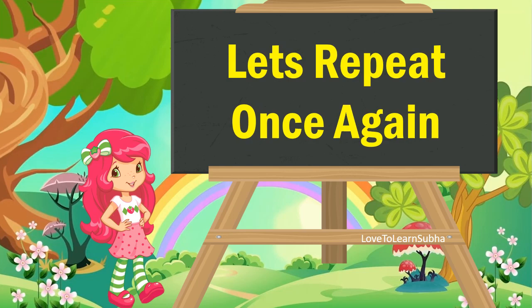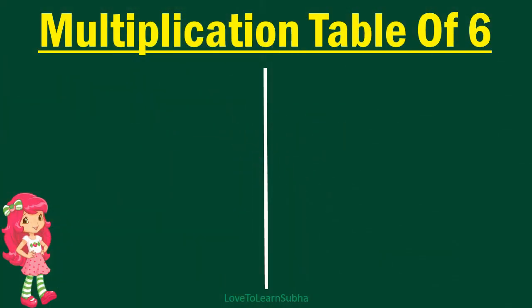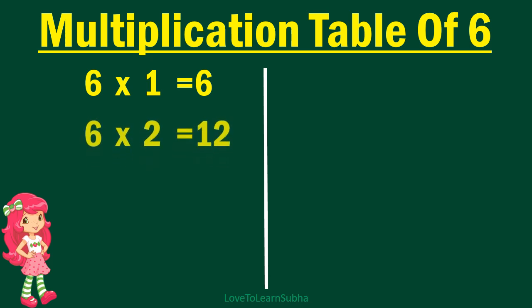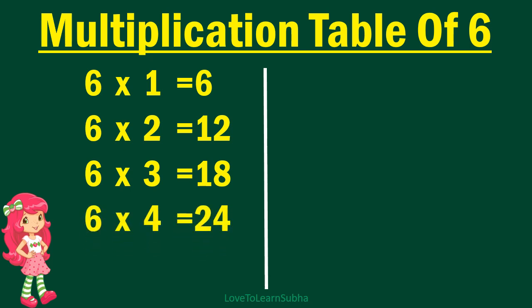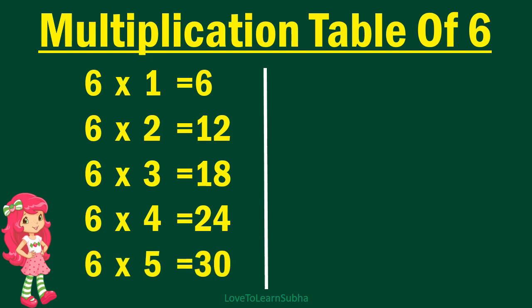Now let's repeat it once again. 6 ones are 6, 6 twos are 12, 6 threes are 18, 6 fours are 24, 6 fives are 30.